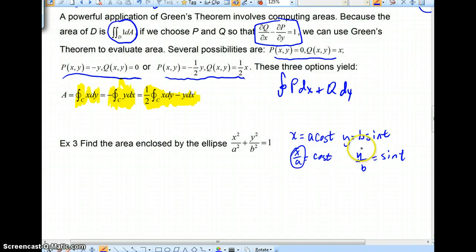Therefore, X over A squared plus Y over B squared, quantity squared, would equal 1, yielding this equation of an ellipse. Well, that's all well and good.